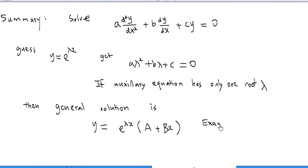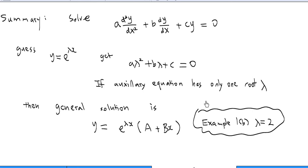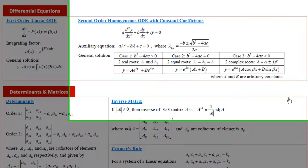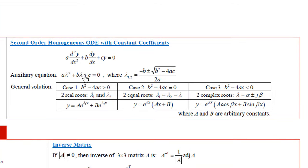In Example 1b we have λ = 2. If you look at page 3 of the formula card, you'll see the method for solving a second-order homogeneous ODE with constant coefficients. When the auxiliary equation aλ² + bλ + c = 0 has two equal roots λ₁ = λ₂ = λ, the general solution is y = e^(λx)·(Ax + B).